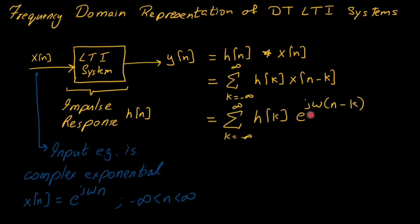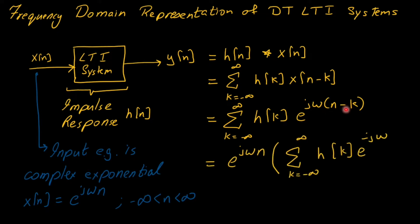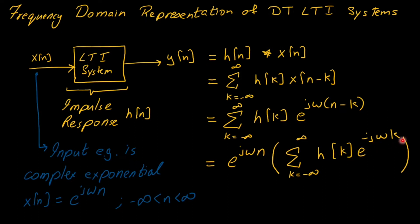Substituting the complex exponential input, the argument n minus k gives e to the power j omega (n minus k). Since the summation variable is k, we can extract e to the power j omega n outside the summation, leaving the summation of h of k times e to the power minus j omega k.